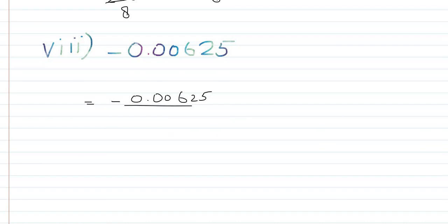For minus 0.00625, we place a fraction and cut the decimal point, placing 1 just below it. We count the digits on the right side of the point: 1, 2, 3, 4, 5 — there are 5 digits — so we place 5 zeros in the denominator. Removing the point and leading zeros, we get minus 625 over 100000.